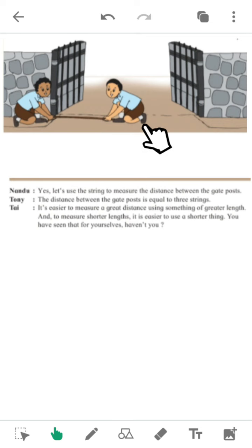The distance between the gate post is equal to three strings. How many strings? Three strings. It's easier to measure great distance using something of greater length.